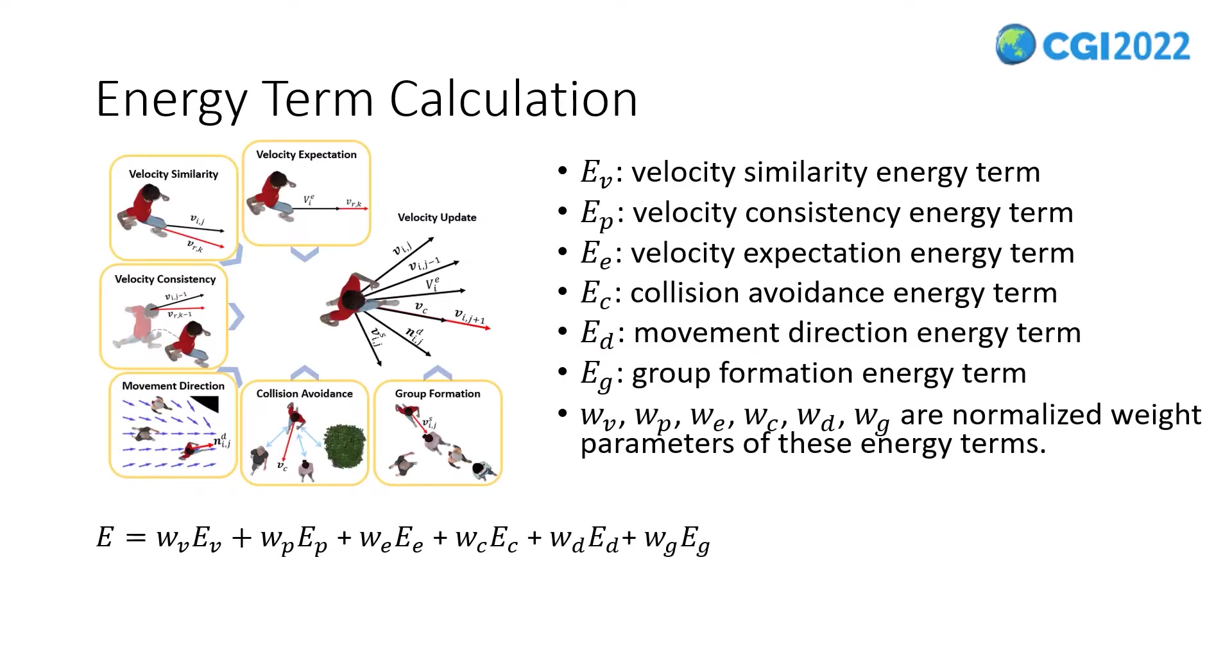We define a crowd energy metric. The crowd energy E is defined as this equation. It includes velocity similarity, velocity consistency, velocity expectation, collision avoidance, movement direction, and group formation.